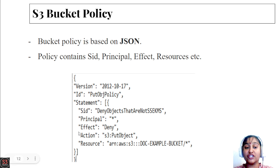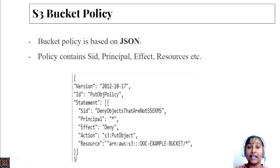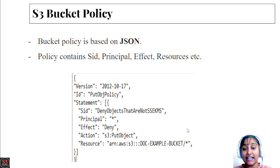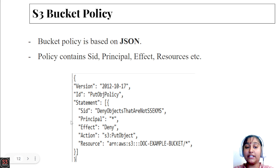Next we have the action parameter, where we define the action we want to allow on our bucket. Last but most important is the resource parameter, where we provide the ARN of the bucket for which we are granting access. Here we specify the bucket's ARN followed by slash-star (/*)  which means the policy applies to all objects in the bucket.